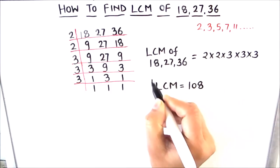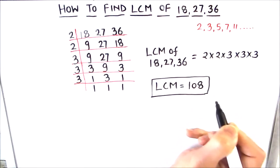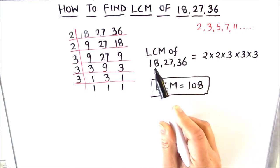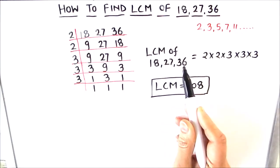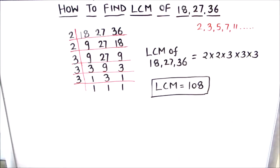So the LCM of 18, 27 and 36 is 108. That means this is the number which is fully divisible by 18, 27 and 36 and is the least common number. So this is how using the prime factorization method, we can find the LCM of any number easily.